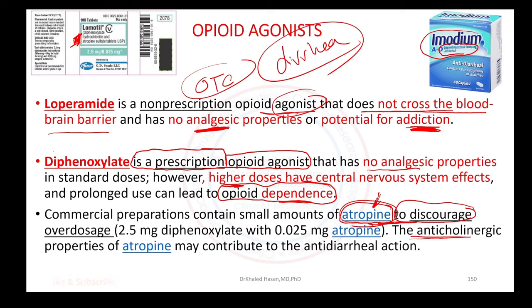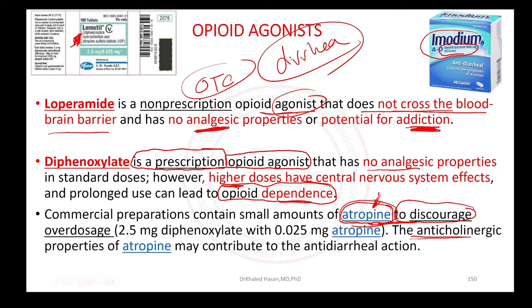To summarize the comparison: loperamide — no prescription needed, opioid agonist, unable to cross the blood-brain barrier, no analgesic effect, no potential for addiction. Diphenoxylate — prescription needed, opioid agonist, no analgesic effect, but at higher doses may cause addiction or dependence. For this reason, diphenoxylate is combined with atropine to prevent dependence and addiction.